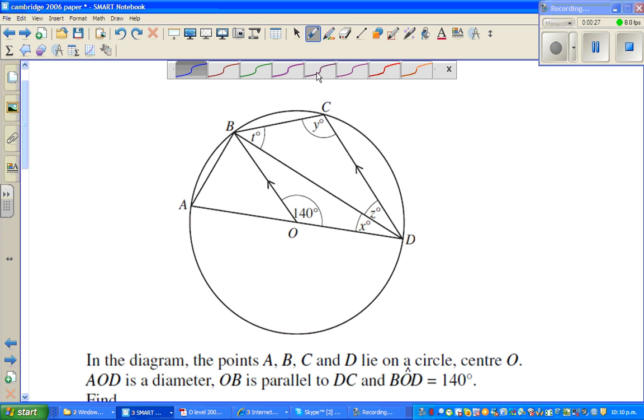ABCD are four points on the circle. O is the center. AOD is a diameter. OB is parallel to DC and angle BOD is 140 degrees. So you want to find X, Y, Z and T.